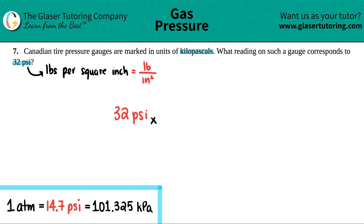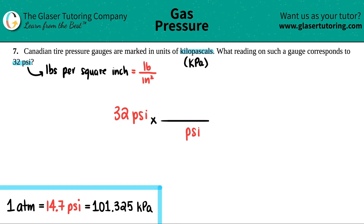Multiply by a ratio, because all we're doing is converting from one pressure unit to another. We don't want psi anymore, so it goes on the bottom — throw the unit you don't want on the opposite side. Put the unit you want, kilopascals (kPa), on the top.